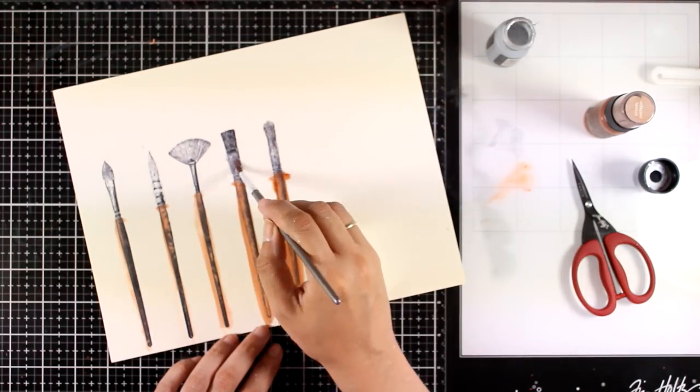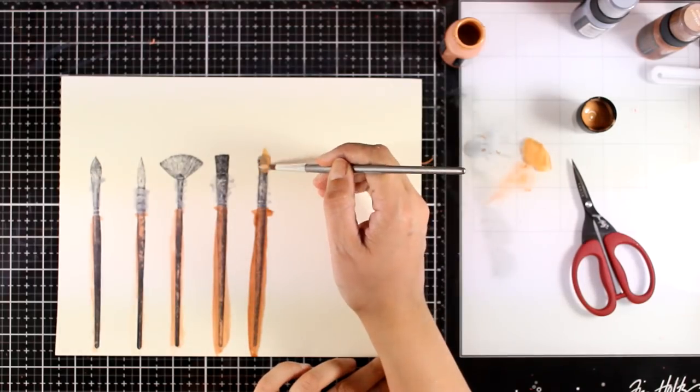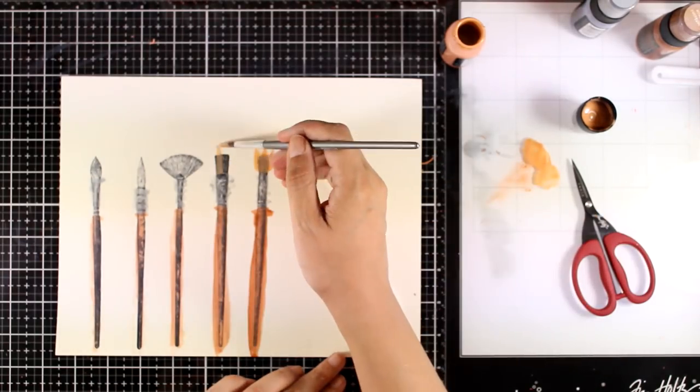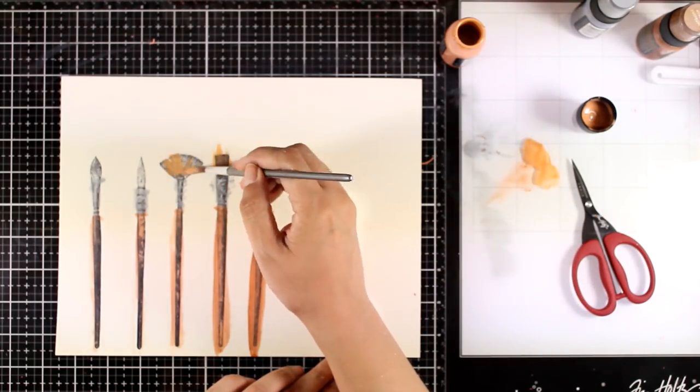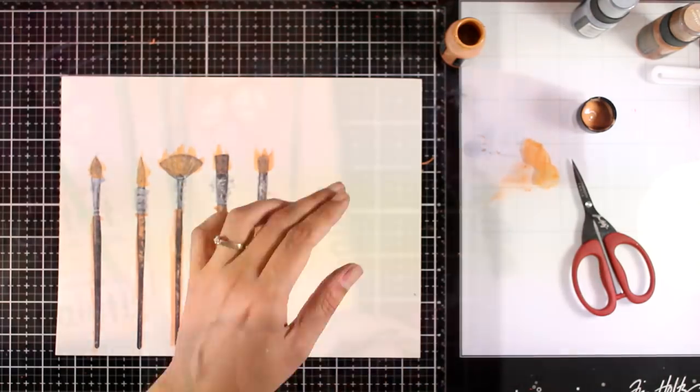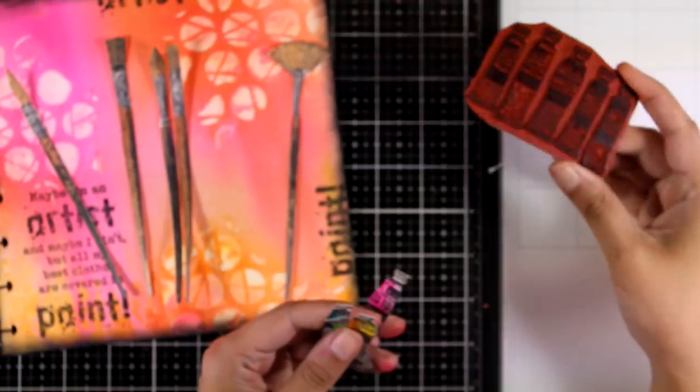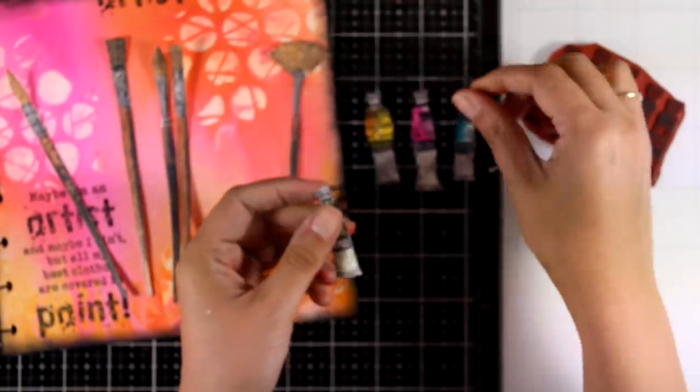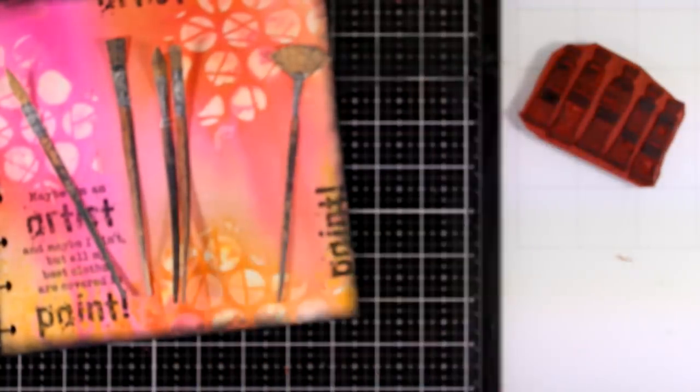Once everything is dry, I'm going to use my scissors and I'm going to fuzzy cut all those brushes since I am going to pop them on my project. Now I have also used this stamp which is also by Darkroom Door and these are some paints that I have already colored. Again, used my acrylic paints to add some color and then fuzzy cut everything.